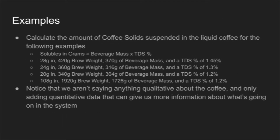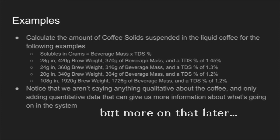Now that you understand how to calculate the amount of coffee suspended in your solution, I give a few examples where you'll calculate it. It's super simple: beverage mass times TDS equals solubles in grams. TDS percentage is also a good indicator of how thick or thin the overall solution is. A very high TDS espresso will have a different tactile expression than a more diluted brew ratio.